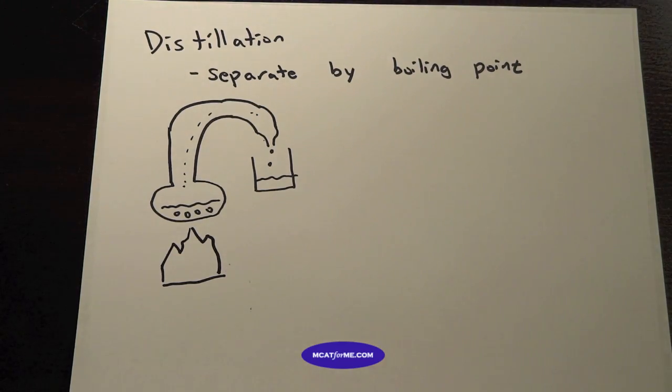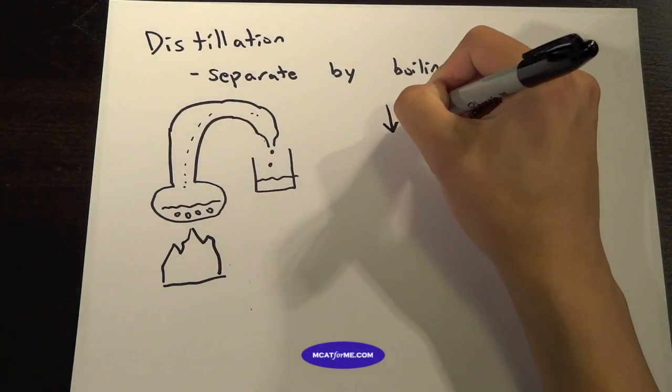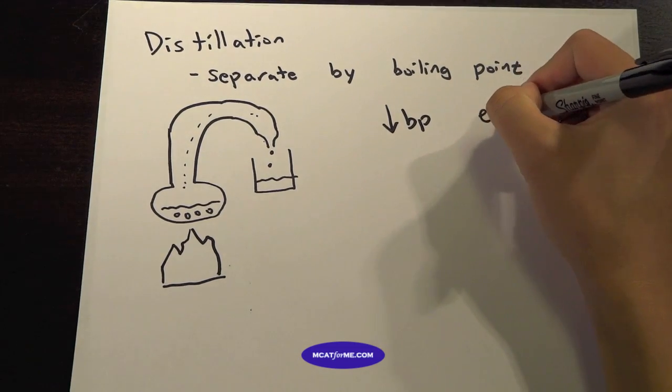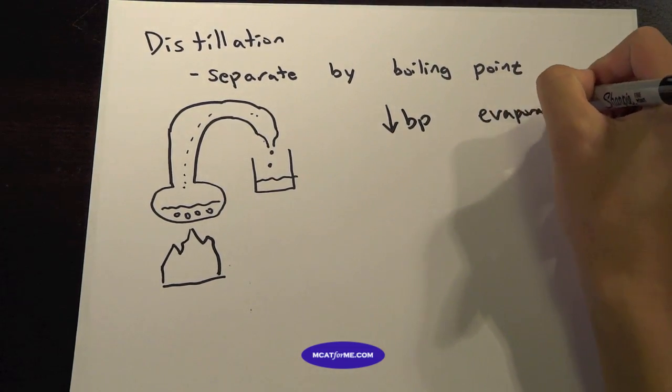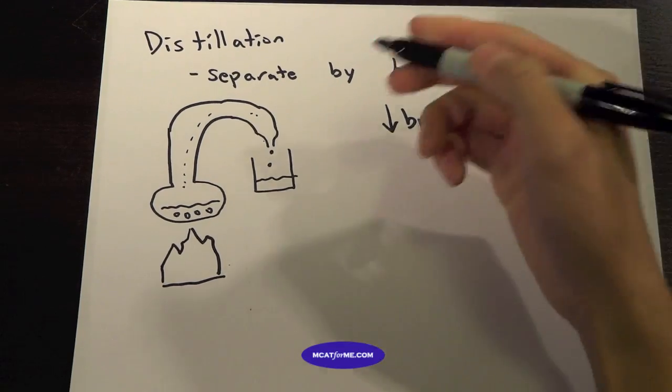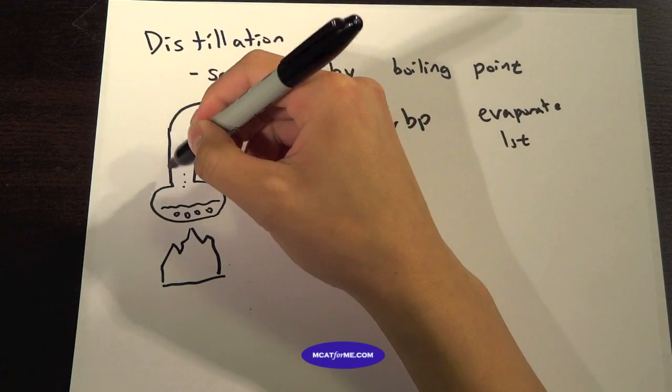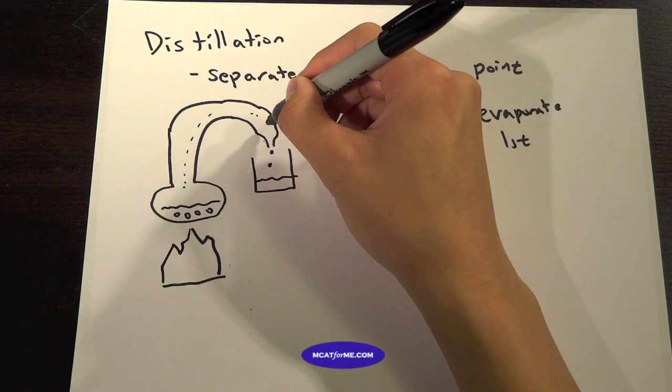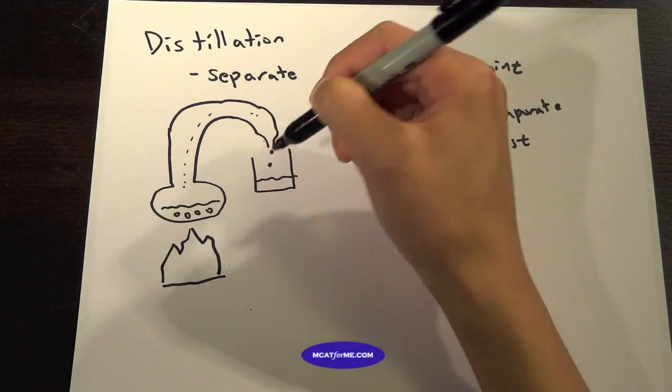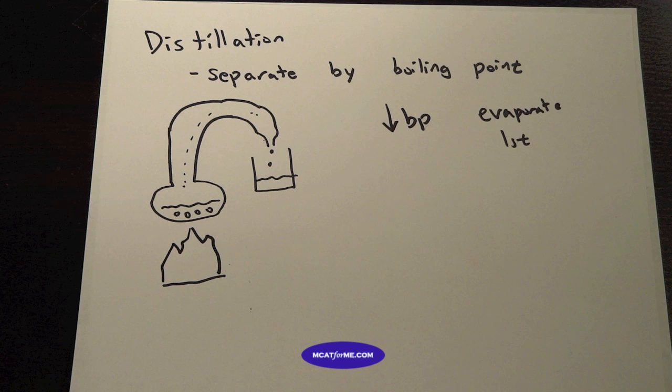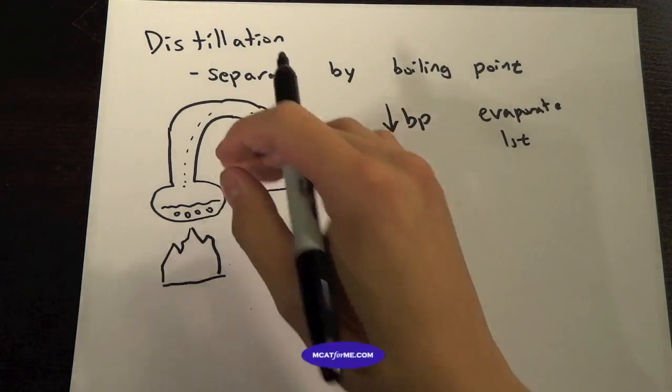So something that has a very low boiling point will evaporate first. So if it evaporates first, then it can travel through as a gas and it'll slowly condense as it comes back down and it'll form a liquid once it goes back down here. So we're separating by boiling point. Something with a low boiling point will come out first.